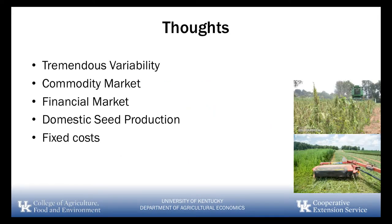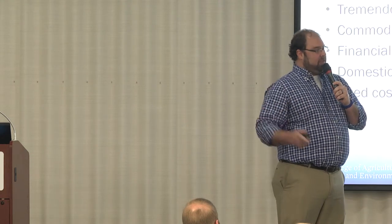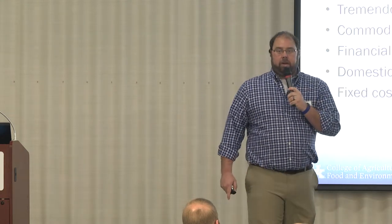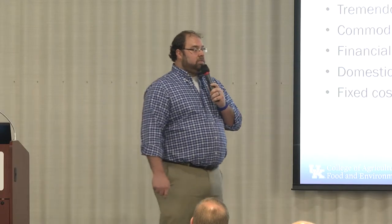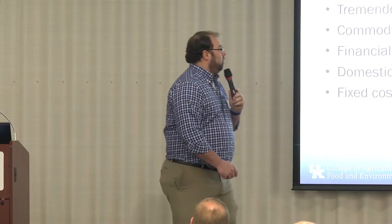Some final thoughts on Project 1: there is tremendous variability, as you can see in the graph. I expect these to turn into commodity markets. The financial market is a real problem — banks will basically ask what other collateral and profitable crops you have before lending. Domestic seed production, as it comes along, will help on the cost of production side. I also haven't included fixed costs like machinery in this model yet, so if you're at six dollars per acre, you're probably going to be less than zero.